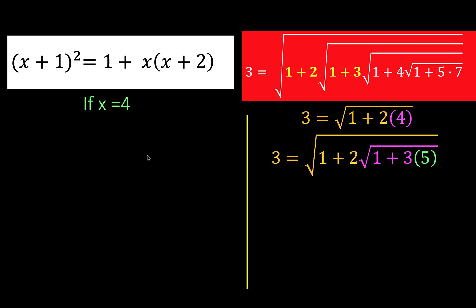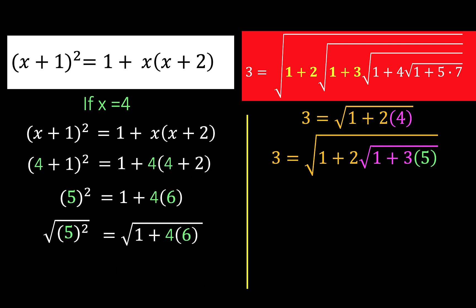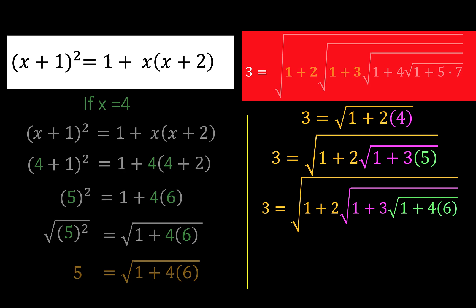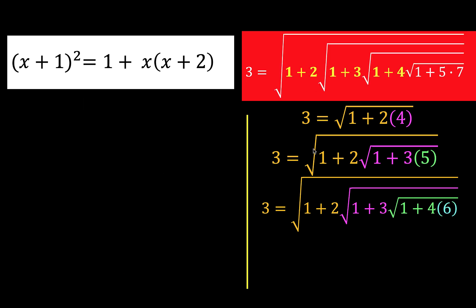So let x be equal to 4, and simplifying, we arrive at 5 equals the square root of 1 plus 4 times 6. So let's replace this 5 by this radical to arrive at this. And again, comparing the original one with our results, we now have this 1, 2, 1, 3, 1, 4 taken care of by this last equation.